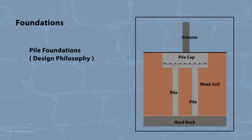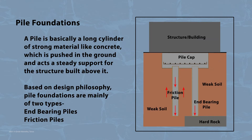A pile is basically a long cylinder of a strong material, such as concrete, that is pushed into the ground to act as a steady support for the structure built on top of it. Based on the load transfer system, pile foundations are mainly of two types: end bearing piles and friction piles.